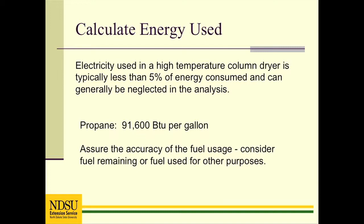Normally, the amount of electricity used can be ignored when determining the amount of energy used in high-temperature dryers, since the amount is usually less than 5 percent of the energy used. This simplifies the calculations, and typically, if comparing two high-temperature dryers, the difference in electrical consumption will be small. The heat content value used for propane in grain drying applications is 91,600 BTUs per gallon. Use fuel delivery records to be as accurate as possible, and assure that the fuel was used for drying and not for other purposes.